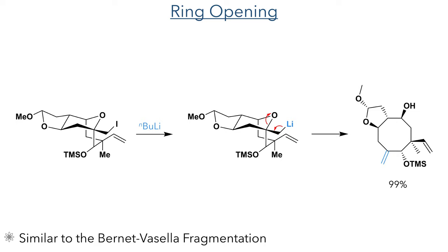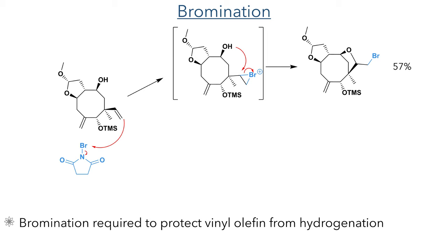This newly produced olefin needed to be converted to a methyl group. However, this presented a challenge for regioselectivity, as the molecule already contained a more accessible olefin which was more reactive. To overcome this, they brominated the molecule to act as a protecting group. They used NBS, which was attacked by the olefin, producing a bromonium intermediate, which was in turn attacked by the hydroxyl group, forming a new ring with a brominated pendant group in a 57% yield.